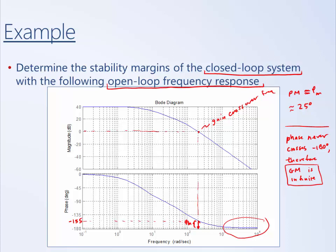In practice, you wouldn't want to do that. When you're really close to minus 180 degrees, you would like to stay away from that. There are some good rules of thumb. Different applications have different requirements, but some people talk about a good gain margin being at least 6 decibels, and people talk about wanting at least 30 to 60 degrees of phase margin.